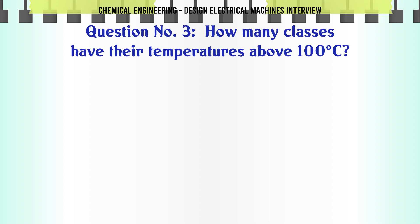How many classes have their temperatures above 100°C? A: 5, B: 6, C: 7, D: 8. The correct answer is 6.